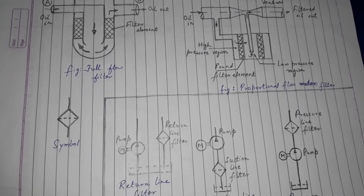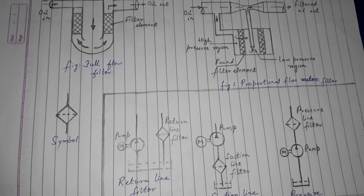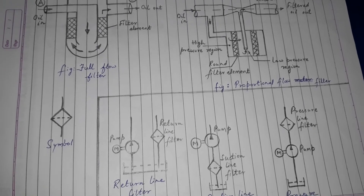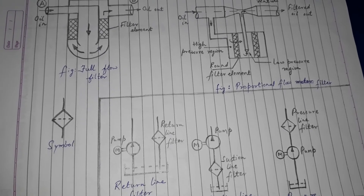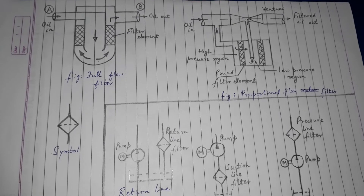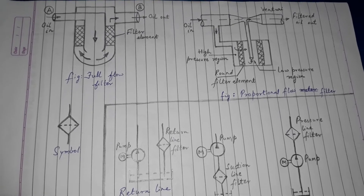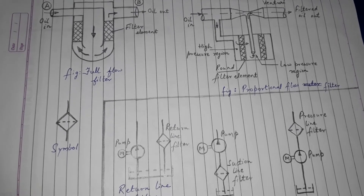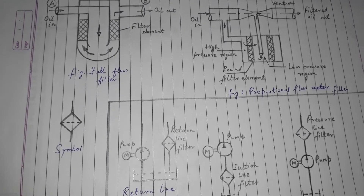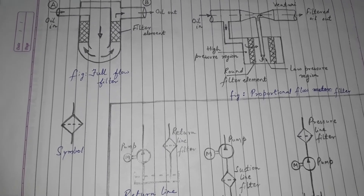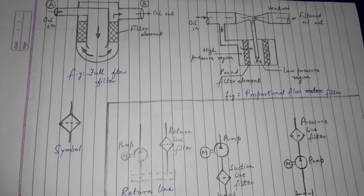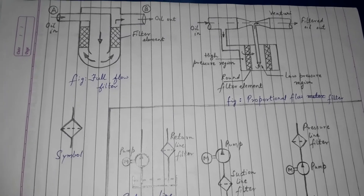अब हम oil filter के बारे में बात कर रहे हैं। इसका main function है filtering। Filter station वो होता है जो unwanted materials या particles को arrest करता है — यानी उन्हें रोकता है।